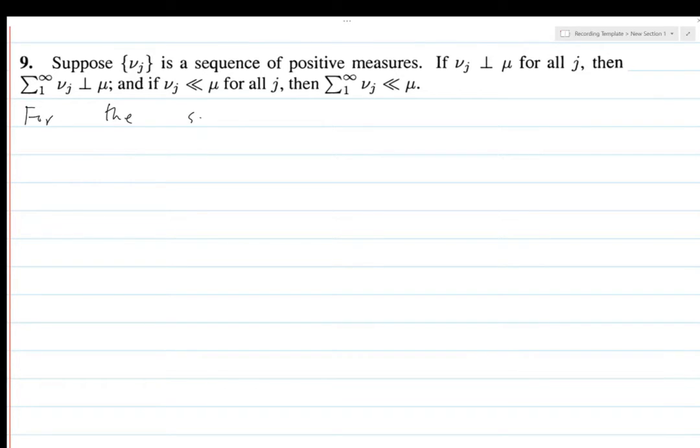For the second part suppose nu_j is absolutely continuous with respect to mu for all j in N. Then nu_j of E is equal to 0 for all j and that's just because of this condition.